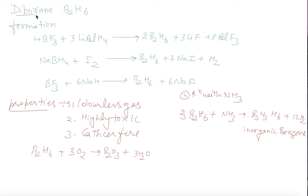Students, now Diborane, that is B2H6, can be formed when the reaction of BF3 with lithium aluminum hydride. We will get B2H6 with the side product lithium fluoride and aluminum fluoride.